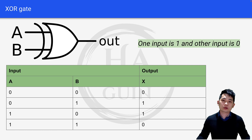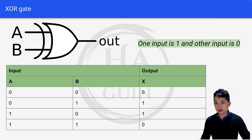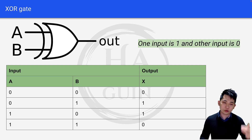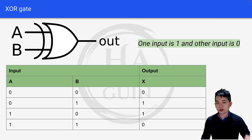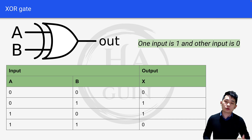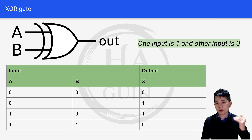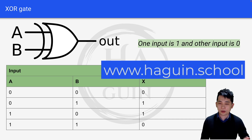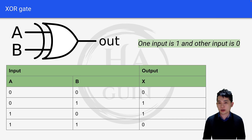So we have covered different logic gates in this series. If you are interested to learn more topics about computer science, definitely like the video and subscribe to the channel. And if you are taking Cambridge A-Level Computer Science, definitely check out my upcoming online course at www.hagren.school. Thank you, and I'll see you again. Bye-bye.